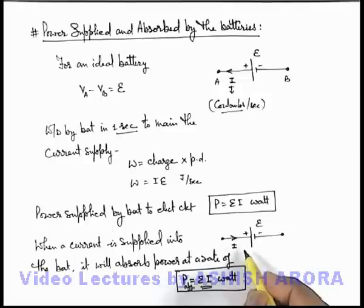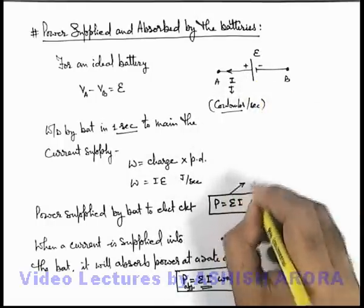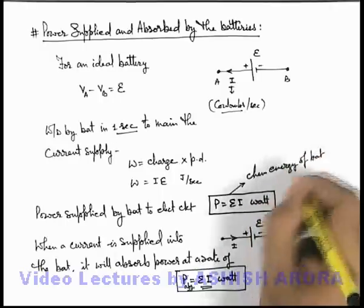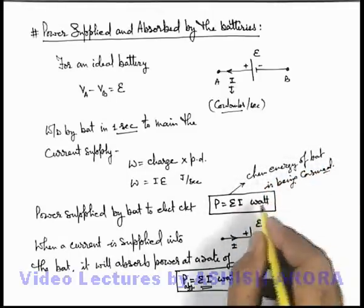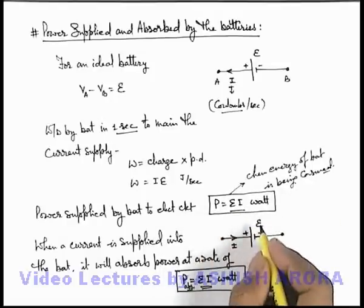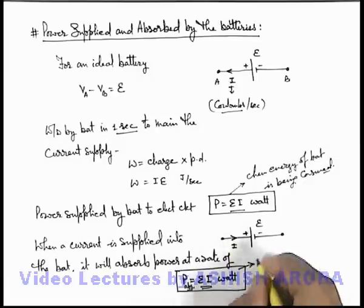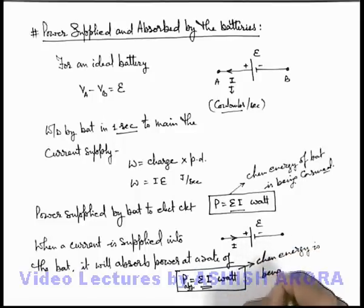We know that a battery transforms chemical energy to electrical energy. So in the first situation — when supplying current — this is the rate at which the chemical energy of the battery is being consumed, because chemical energy is being transformed into electrical energy at a rate of E·i. In the second situation, the battery is absorbing energy, meaning chemical energy is being restored in the battery.